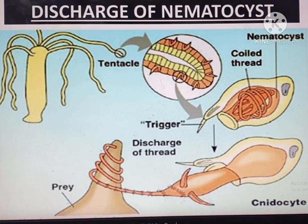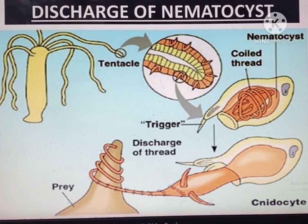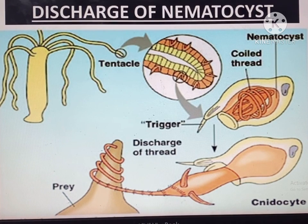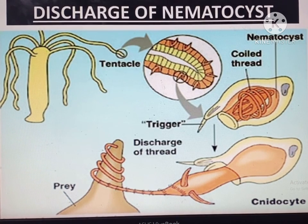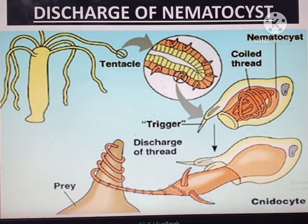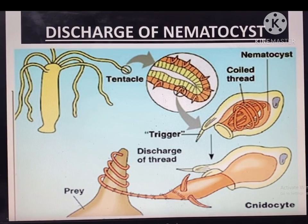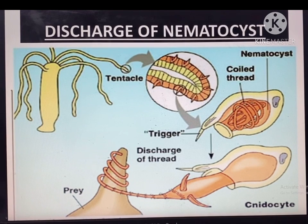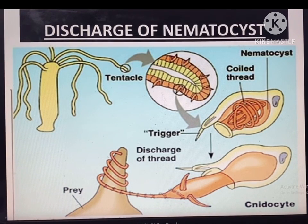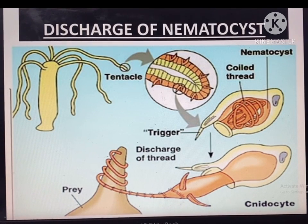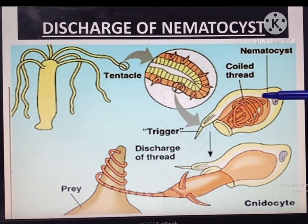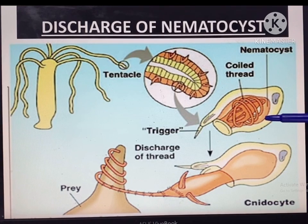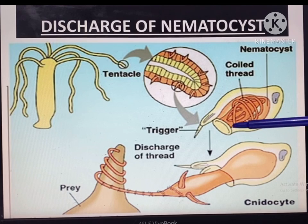Let's know something about the discharging mechanism of nematocysts — how the nematocyst thread is discharged from its capsule. The discharge of nematocysts takes place when the nidocil is stimulated by food, prey, or enemy. Neither touch alone nor the presence of food causes the discharge, but touch and presence of food together cause discharge. The wall of the nematocyst is impermeable to water, but on stimulation, the capsule wall suddenly increases its permeability, causing a rapid intake of water, and osmotic pressure increases inside the capsule. The osmotic pressure is increased due to endosmosis of water. As a result, the operculum or lid opens up, forced to open.